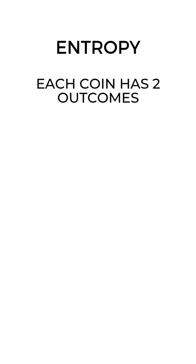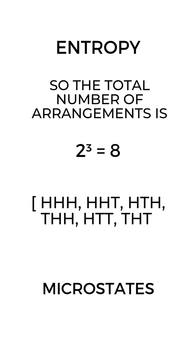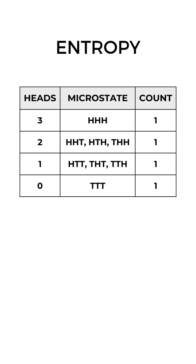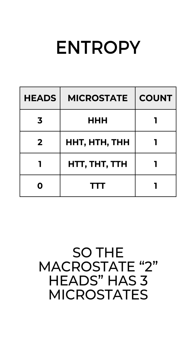Let's take a simple example. You flip three fair coins. Each coin has two outcomes, so the total number of arrangements gives us the microstates — each one a complete microscopic snapshot. But from a distance, you don't see exact outcomes; you just count how many heads. That's a macrostate. So the macrostate of two heads has three microstates — it's more likely than all heads or all tails.